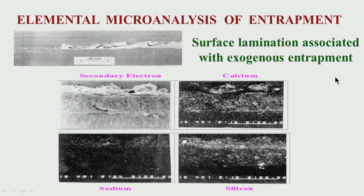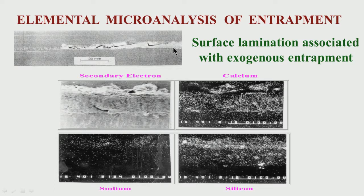If some large exogenous entrapment gets inside the liquid steel, during casting it will get entrapped, and then during rolling it will come near the surface and cause surface defects called surface lamination. If you cut a small sample and put it under a scanning electron microscope, it is possible to know what elements are present in the entrapments. These entrapments are basically oxides, and we need to understand what type of oxides they are to determine their genesis.